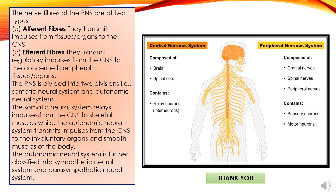The somatic neural system, however, is under our control. For example, if there is a burning candle, whether you will touch it or not is decided by the somatic neural system. Your eye sees the candle burning, sends the information to the brain, and the CNS does the analysis and informs the muscles through efferent fibers not to touch the fire. So there is voluntary control in this action. In summary, the peripheral nervous system has two types of fibers — afferent and efferent — helping perform these functions. In the next video, we will discuss further about the central nervous system.